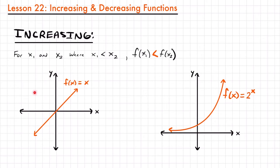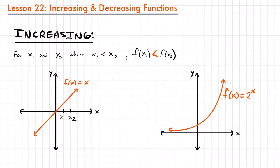For example, if we look at our first graph, f of x equals x, and I picked two values of x — x1 and x2 — the y value of x1 would be at this point, let's say y equals 1, and then x2 would correspond to y equals 2, higher up on our y-axis. No matter what two values of x we pick, whichever is the lesser one is going to have the lesser y value as well.